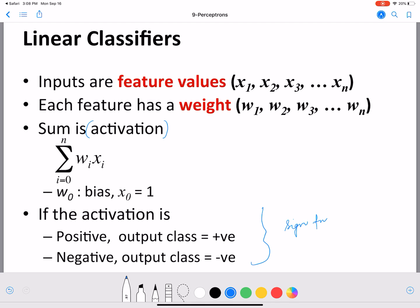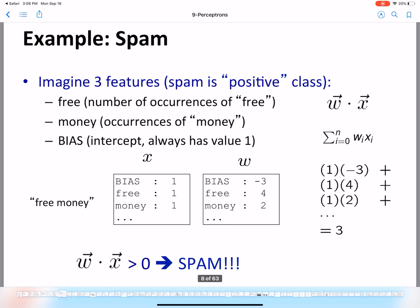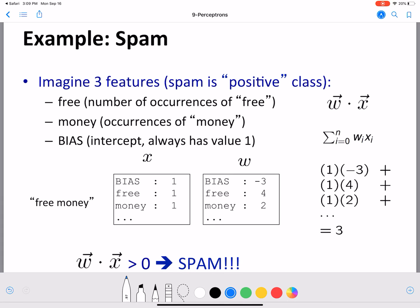Now each feature we know has a weight, and the sum we call the activation. If the activation is positive, then the output class is positive, and this is calculated using a sign function. The perceptron is a combination of the activation and the sign.